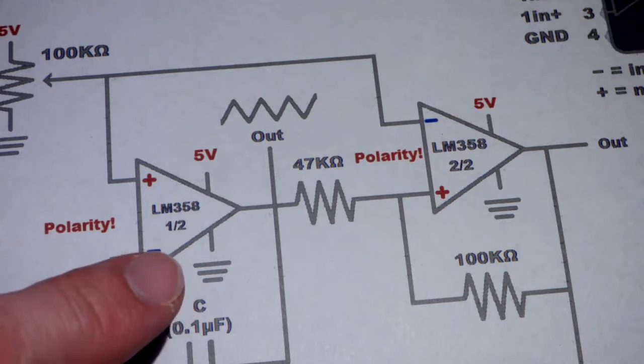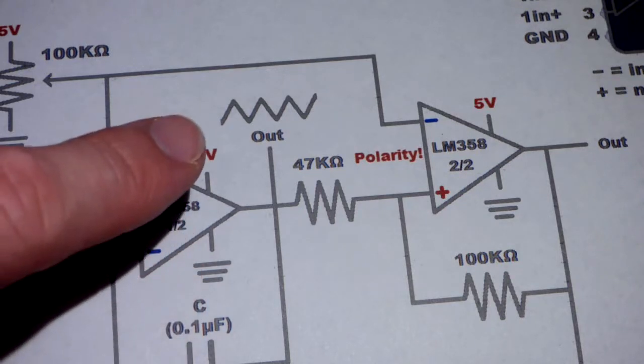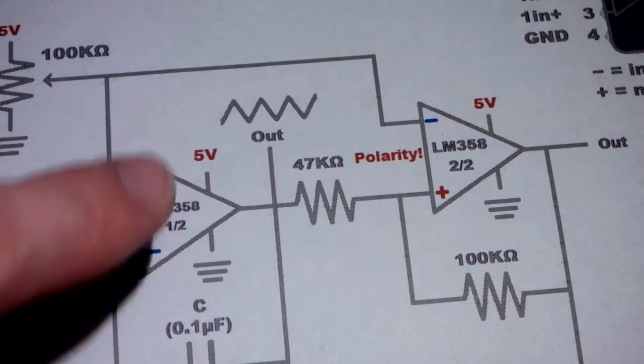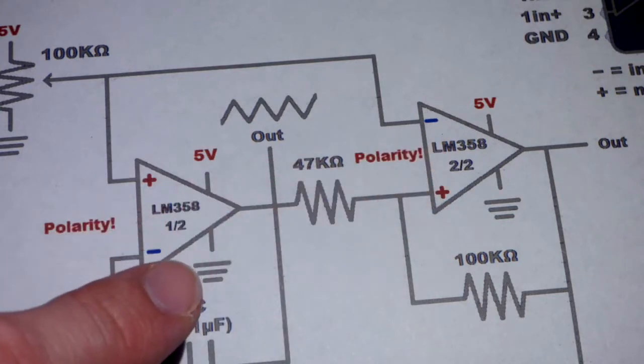Usually when you're looking at op-amp circuits you'll see a negative voltage. I should have put the positive there, but usually there'll be also a negative five volts. This op-amp we can use a single supply.